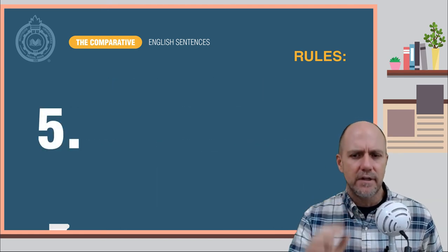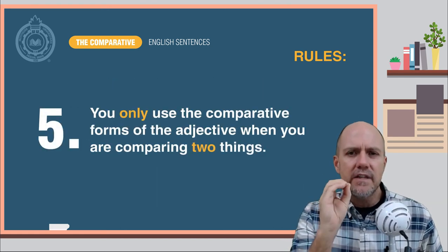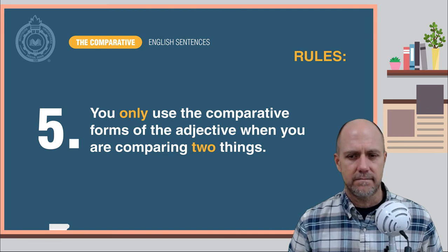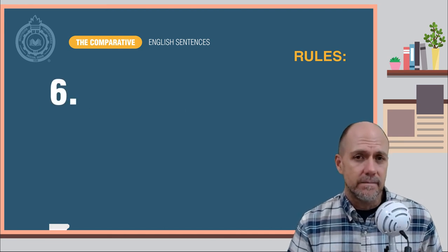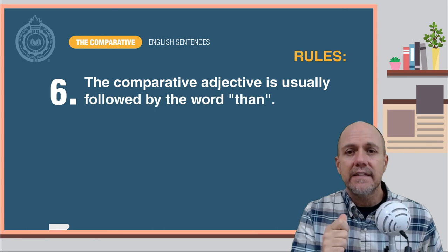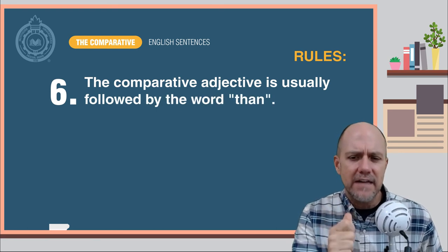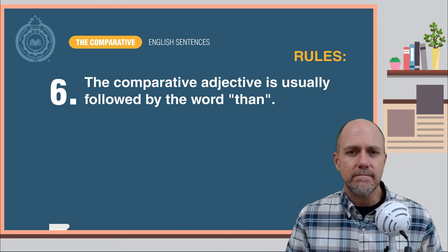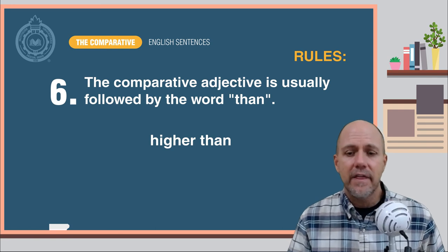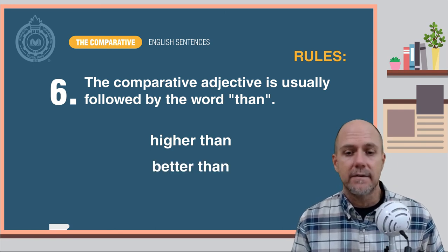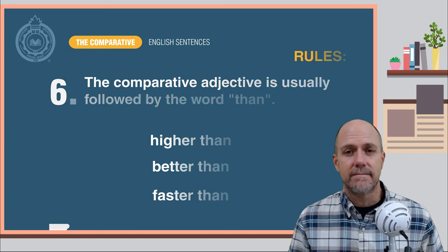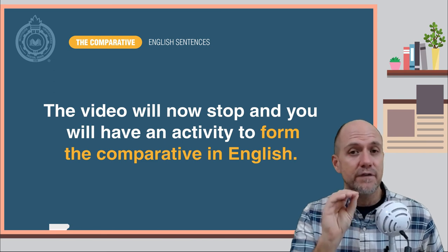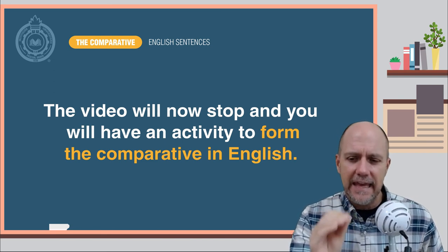Rule number five: You only use the comparative form of the adjective when you are comparing two things. Number six: As you saw in the examples above, the comparative adjective is usually followed by the word than. Here are some examples: higher than, better than, faster than. The video will now stop and you will have an activity to practice forming the comparative adjective in English.